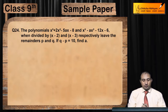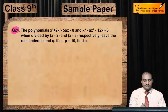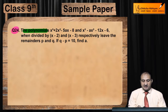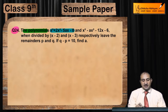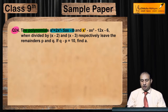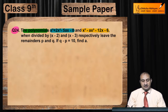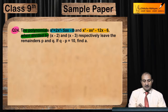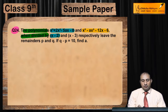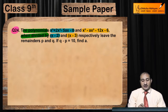Question 24: The polynomial x³ + 2x² - 5ax - 8 and x³ - ax² - 12x - 6, when divided by x - 2 and x - 3 respectively...